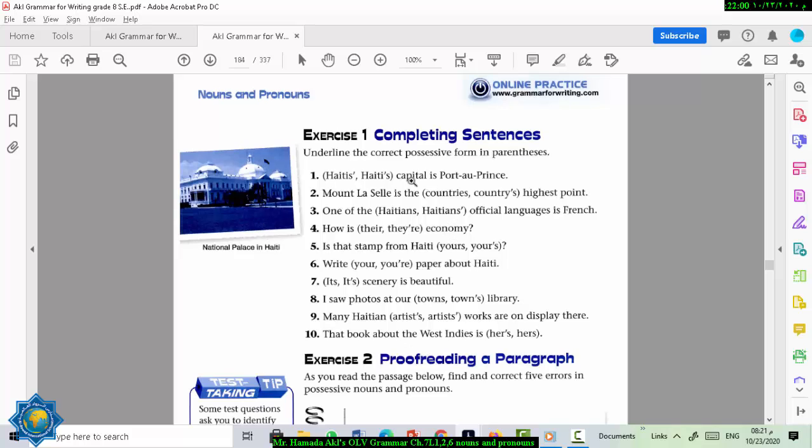Now let's start the exercises. On your own, start completing these sentences. Underline the correct possessive form in the sentence. Number one. Haiti is S-apostrophe or Haiti-apostrophe-S. Capital is Port-au-Prince. So ask yourself, is the main noun singular or plural? Yes, definitely it's singular because Haiti is the name of a place. Singular place. So it must be apostrophe then S or S then apostrophe. If you're not sure, go back to the video or replay the video or have a look at the previous page. The answer is this one. Stop the video. Do this exercise before you continue.